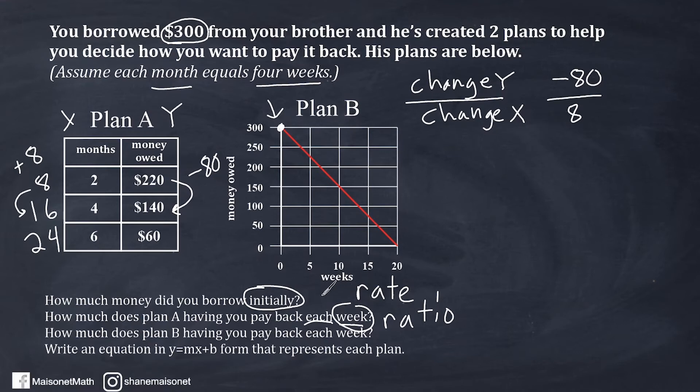Now, if we want to figure out how much it is each week, we just change this into a unit rate by dividing negative 80 by eight, which would be negative 10. Now, why would it be negative? Well, the reason for that is because you started with $300, and each week you are taking away 10 from the total that's owed. So like after one week, you'd owe $290. And then if you took away 10 again, you would owe $280 and so forth. So for the second question here, how much does Plan A have you pay back each week, we would just say $10. We don't have to say negative 10, but we should understand it really kind of is negative because you are diminishing the amount of money that you actually owe your brother.